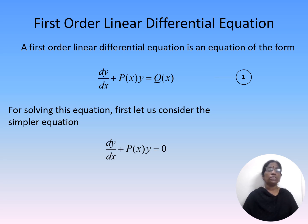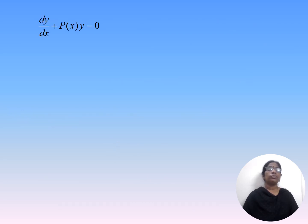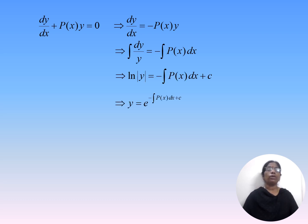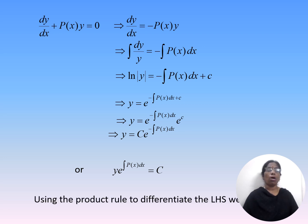To solve this equation, first consider the simpler equation dy/dx + P(x)·y = 0. This can be solved by separation of variables: writing it as dy/dx = −P(x)·y, separating variables and integrating both sides gives ∫dy/y = −∫P(x)dx, and finally the solution is y = c·e^(−∫P(x)dx), or equivalently y·e^(∫P(x)dx) = c.